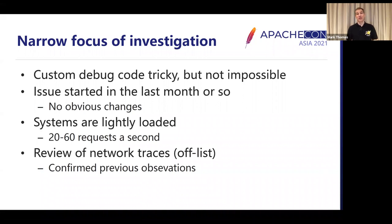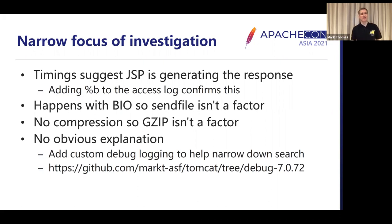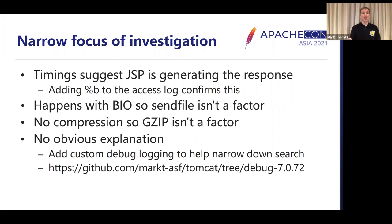We discovered that the system was very lightly loaded — only 20 to 60 requests a second, and Tomcat will happily handle orders of magnitude larger than that, so not particularly a load-related issue. We had a very careful look at the Wireshark traces, which confirmed everything we'd seen before. We added some information to the access log, and that confirmed that as far as we could tell, Tomcat was writing those bytes. So this was really strange — Tomcat's writing it, but it's never being seen. We know the issue happens with blocking I/O so it can't be send file, we know there's no compression, so really at this point there's no obvious explanation.